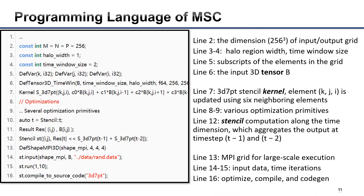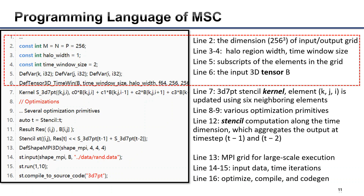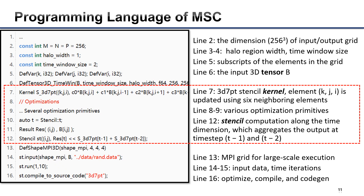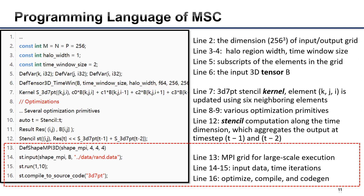This figure presents the code implementation of a 3D 7-point stencil using MSC. First, we define the input tensor B and other required variables. Second, we describe the kernel, add optimization primitives, and define the stencil along the time dimension. Then we define the grid of MPI processes and so on. Therefore, users just need to define the stencil similarly to C-code and can enjoy the provided optimizations.